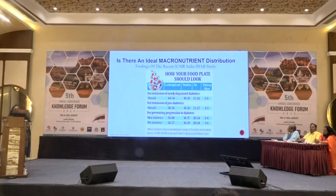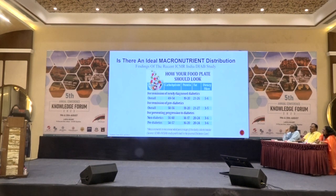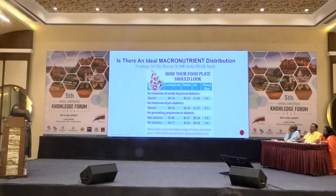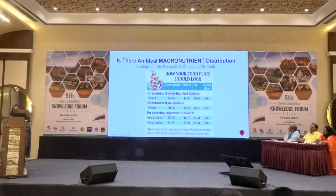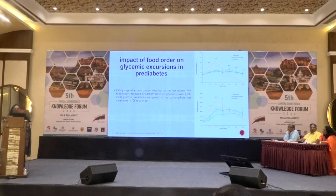For preventing progression of diabetes in non-diabetics, carbohydrates should be 56–60%, and for pre-diabetics 54–57%. Protein is 14–17% and 16–20% respectively for both cases. Fat is 20–24% for both, and dietary fiber is 3–6% for both cases.